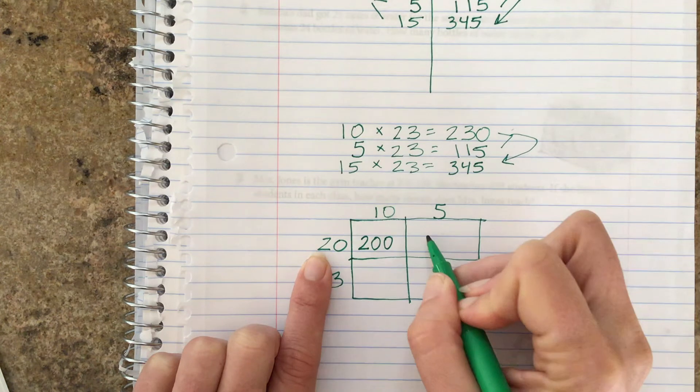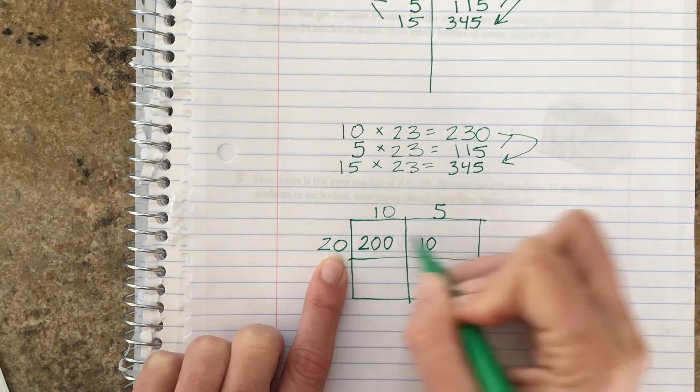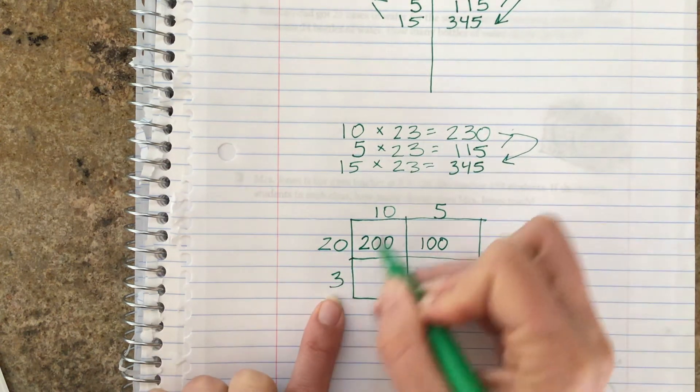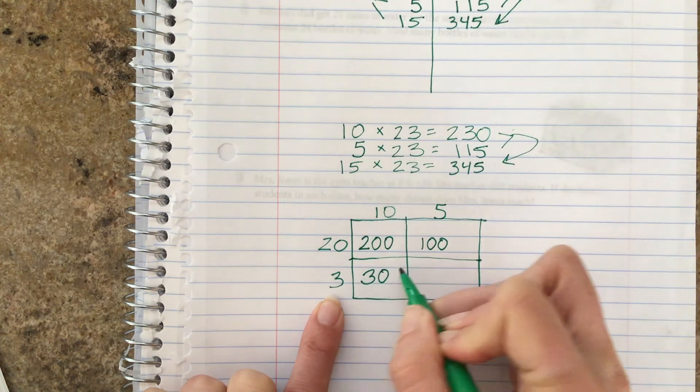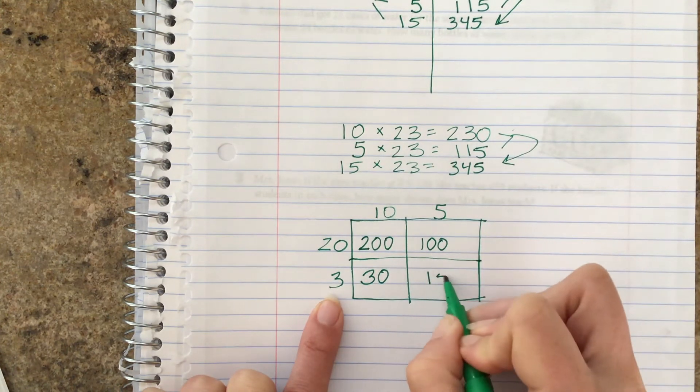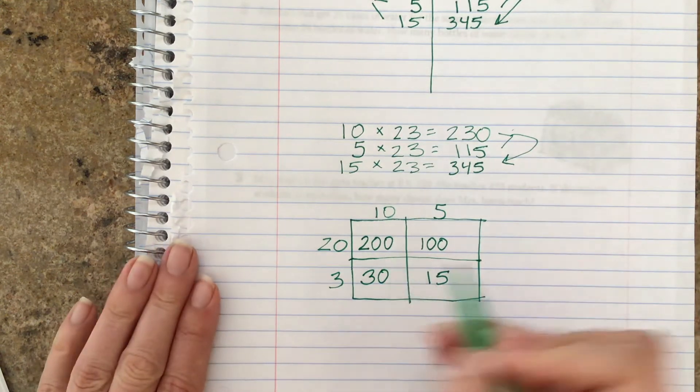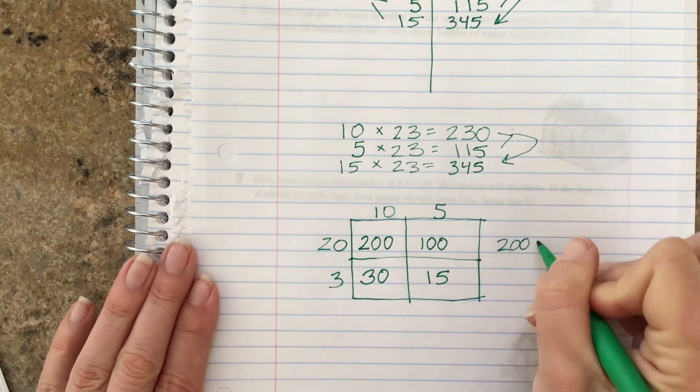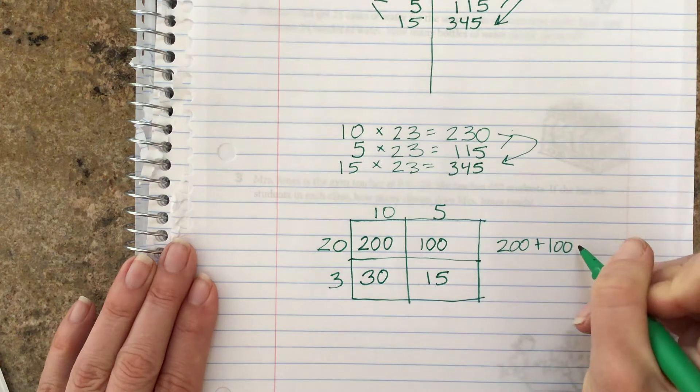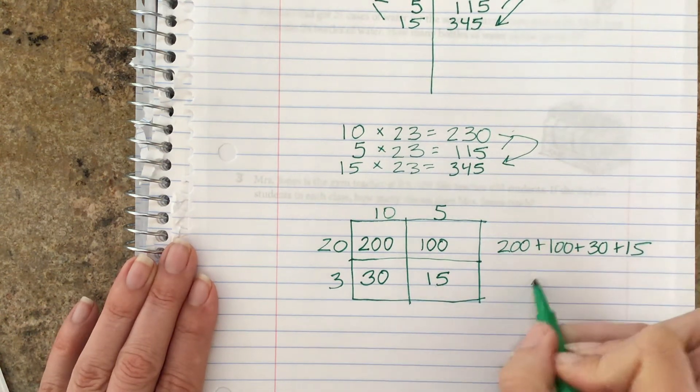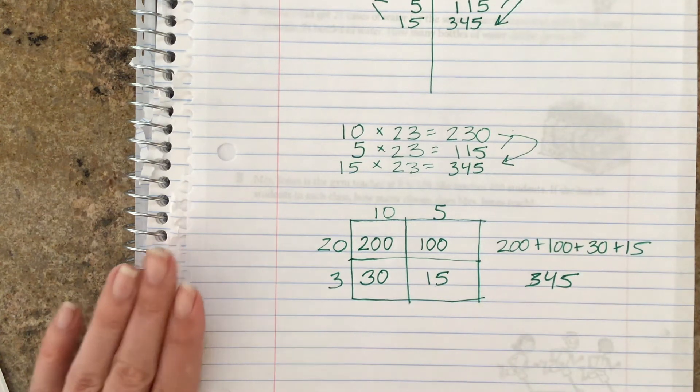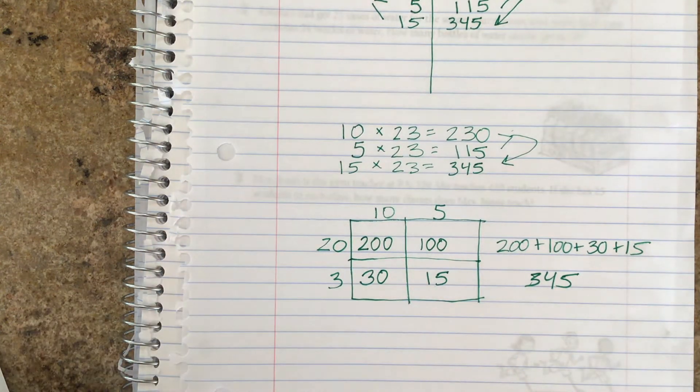So 20 times 10: 2 times 1 is 2, here's two zeros to attach. 20 times 5 is 10, here's a zero to attach. 3 times 10: 3 times 1 is 3, attach your zero. 3 times 5 is 15. And then you would add all of these boxes up and you should have got 345. Is that what you did or did you do something different? I wish I could see and you could tell me all about it.